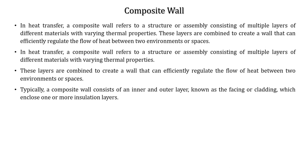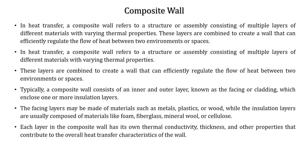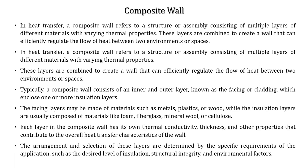Typically it consists of an inner and an outer layer known as facing or cladding, which enclose one or more insulation layers. The facing layers may be made of materials such as metals, plastics, or wood, while the insulation layers are usually composed of materials like foam, fiberglass, mineral wool, or cellulose. Each layer in the composite wall has its own thermal conductivity, thickness, and other properties which contribute to the overall heat transfer characteristics of the wall. The arrangement and selection of these layers are determined by the specific requirements of the application, such as the desired level of insulation, structural integrity, and environmental factors.